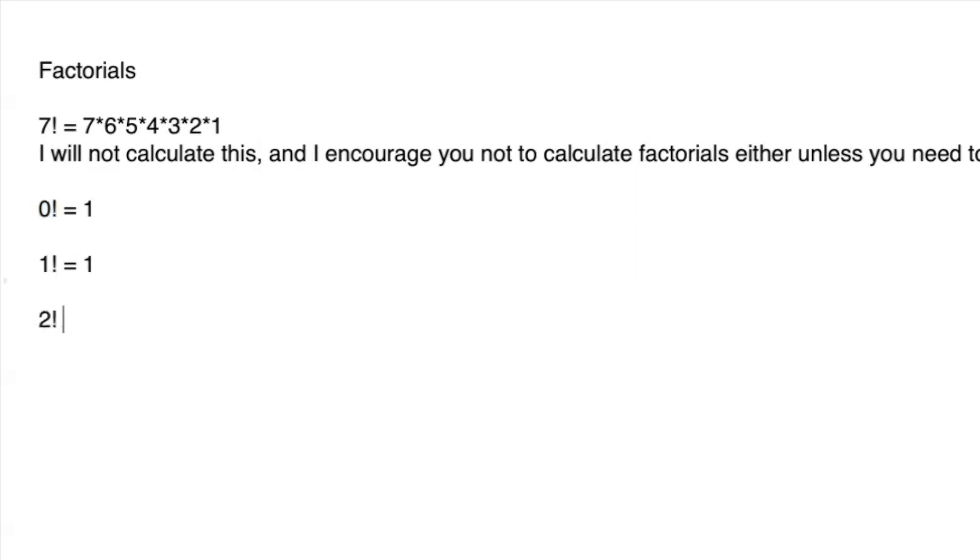1 factorial is 1. 2 factorial is obviously 2 times 1, which is 2, and so on.